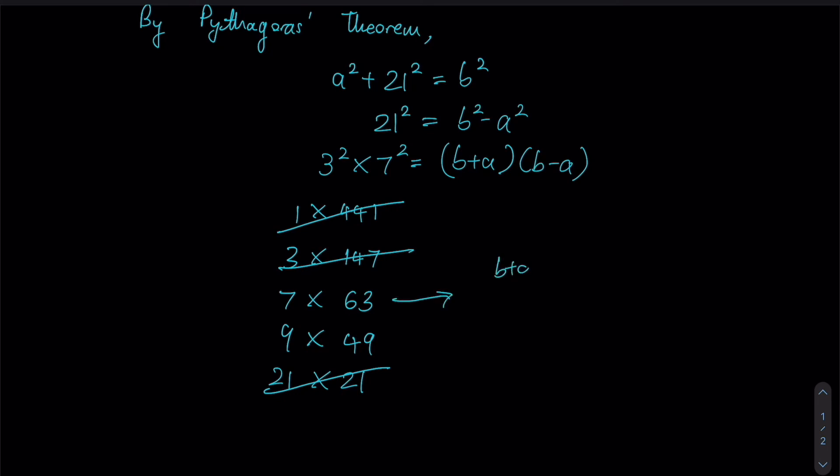Now assuming this were the case, we have b + a is 63 and b - a is 7. So let us first see whether we can obtain integer values for b and a first. Adding these two, we have 2b = 70 and b will be 35. And then now we can substitute in the value for a; a will give us 28. So yes, we do get integer values, but let us see whether we could obtain any smaller values over here.